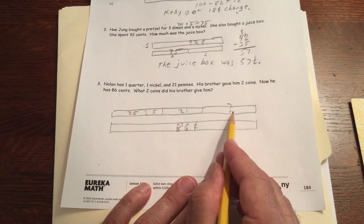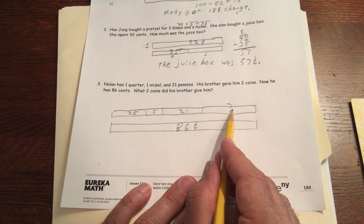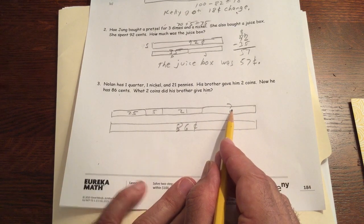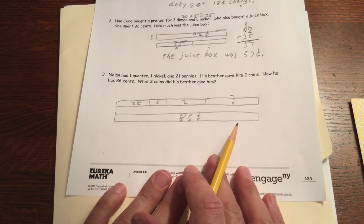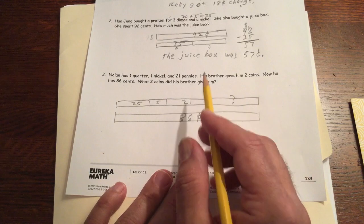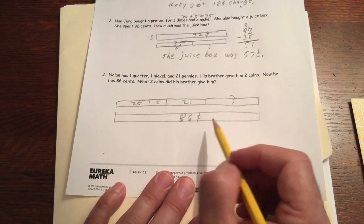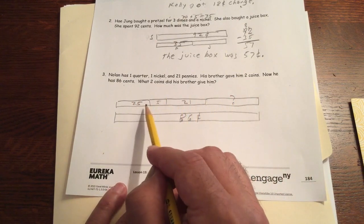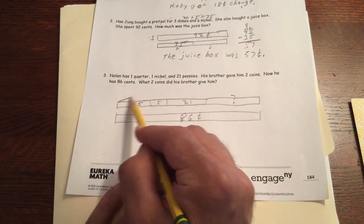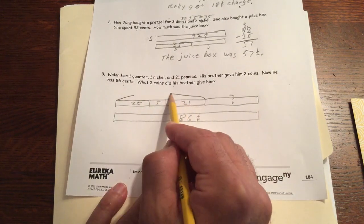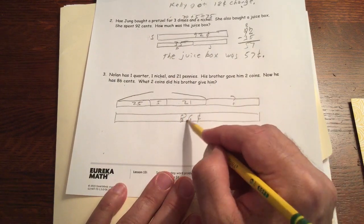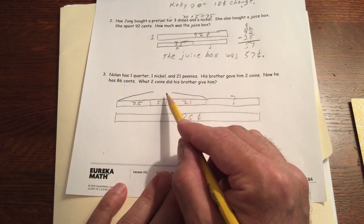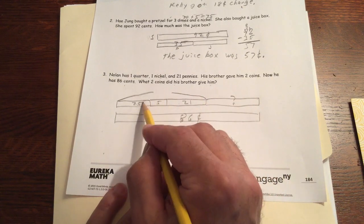And once we figure out how much it is, then we can figure out what kind of coins he might have given him. And there might be more than one right answer to this because a lot of times there's more than one way to make an amount out of coins. So let's see, we have to figure out what this is together, and then we can figure out the difference between 86 and this. So this total here.